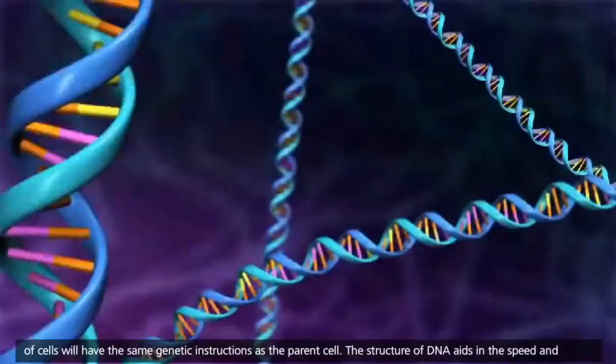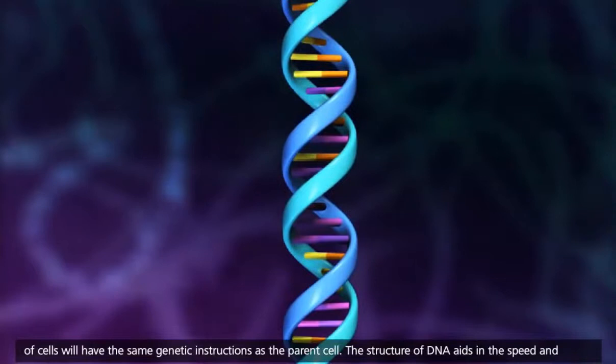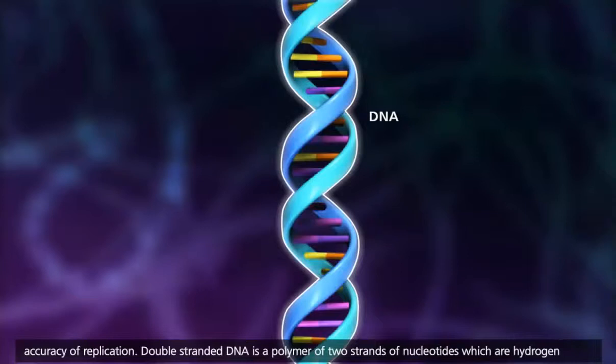The structure of DNA aids in the speed and accuracy of replication. Double-stranded DNA is a polymer of two strands of nucleotides, which are hydrogen bonded to each other to form a double helix.